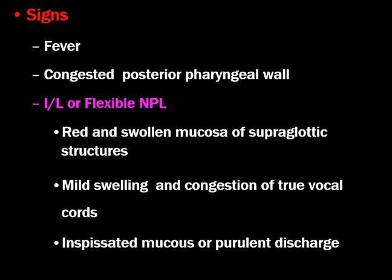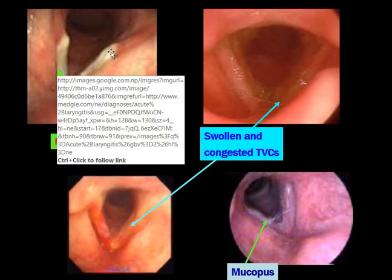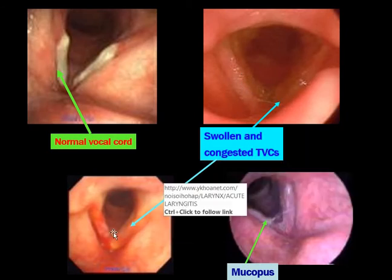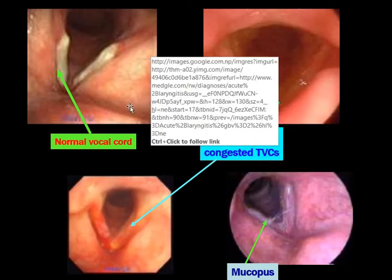Inspissated mucus or mucopus may be present. Most of the time flexible nasopharyngolaryngoscopy is not performed in acute laryngitis. If complaints of throat pain, worsening malaise, and body ache persist for at least five to seven days, and if it goes for more than two weeks, there is an indication for flexible nasopharyngolaryngoscopy. In figures showing different types: normal vocal cords appear as white structures; swollen and congested true vocal cords show redness and swelling along with some inspissated mucus — these are all features of acute laryngitis.